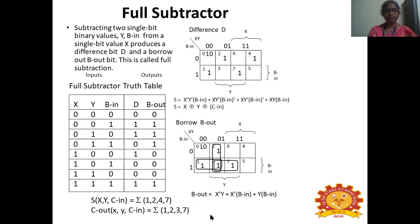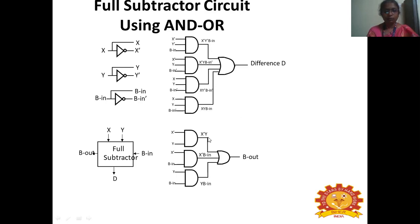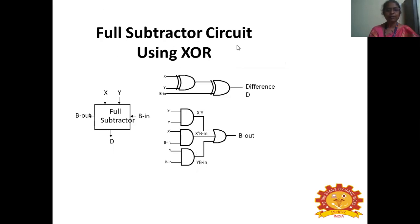The full subtractor difference output is similar to the full adder sum output. It differs only in the borrow expression. For the full subtractor using AND-OR logic, the difference expression is X'Y'BIN + XYB'IN + XY'B'IN + XYBIN — all OR'd together to form the difference bit. For borrow: X'Y + X'BIN + YBIN — all OR'd together to form BOUT.